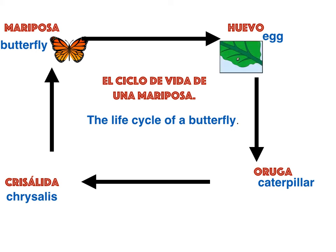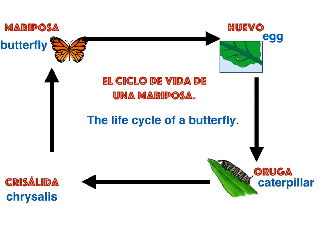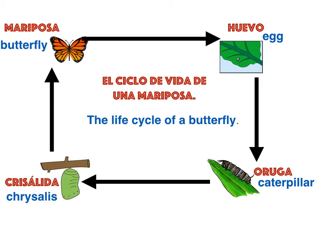From the huevo hatches an oruga, a caterpillar. And the oruga transforms into a chrysalida, a chrysalis. And from the chrysalida emerges a new mariposa. And this cycle goes around and around.